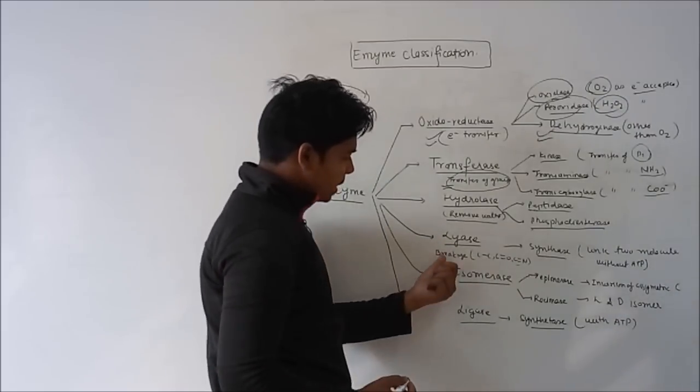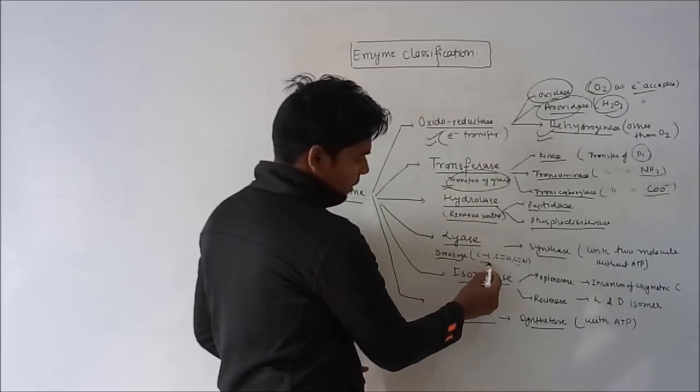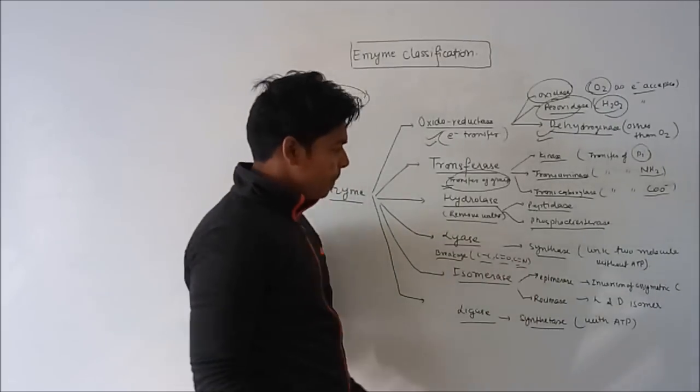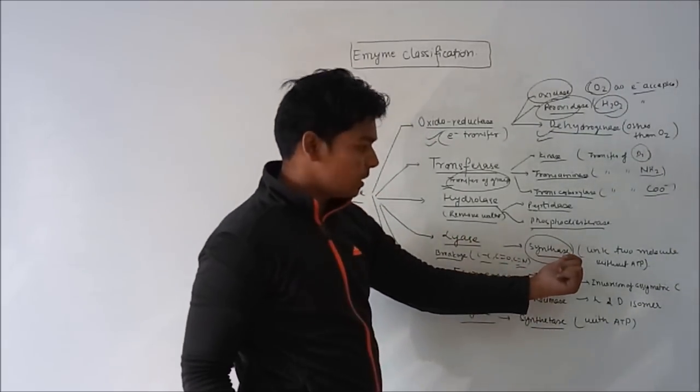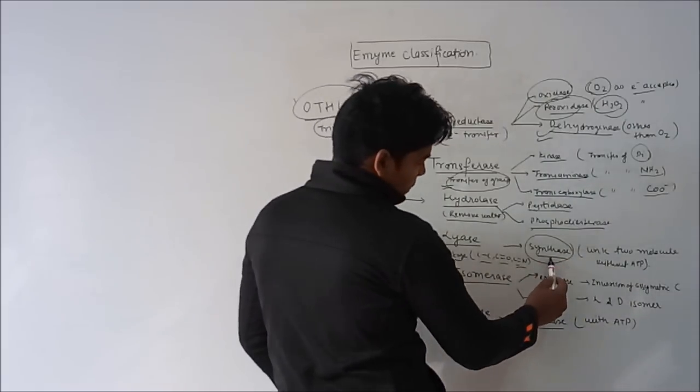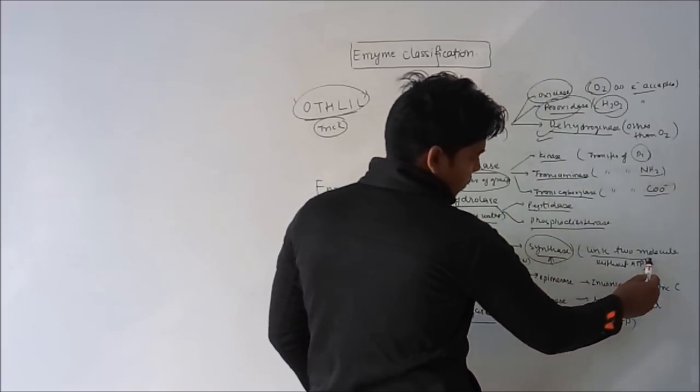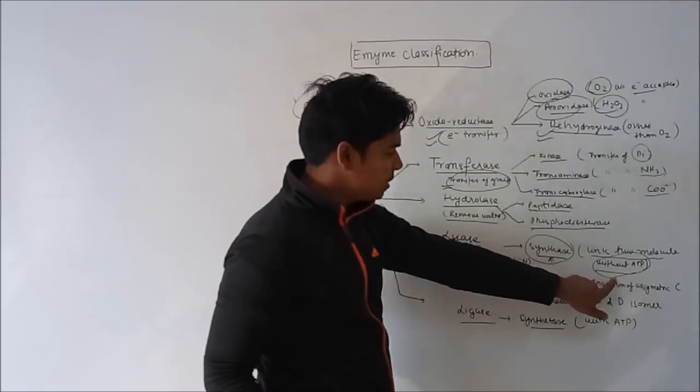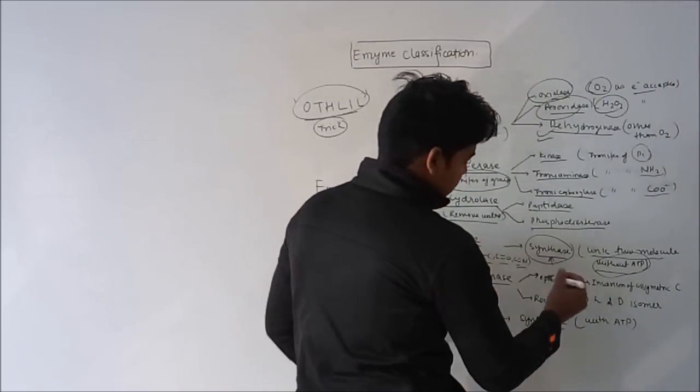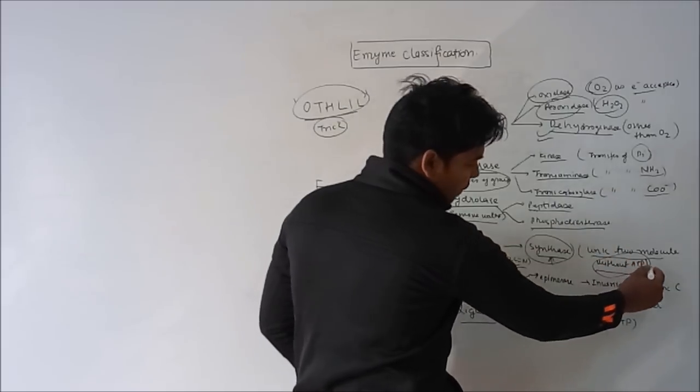The next classification is lyase, that is breaking of C-C bond, C-O bond, or C-N bond. The very common example of lyase is synthase. What is synthase? Synthase links two molecules without ATP. Remember this, synthase links two molecules without ATP.